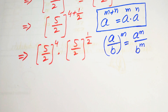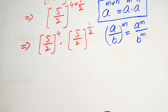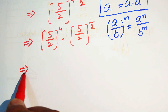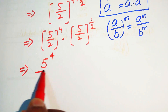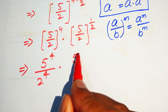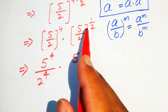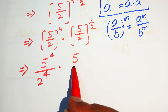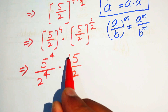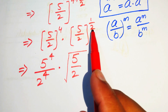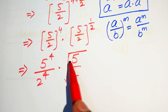According to this exponential law, we write the exponent separately on both terms. It becomes 5 to the power of 4 divided by 2 to the power of 4, multiplied by the square root of 5 over 2. We know that a power of 1 over 2 is the exponential form of a square root, so we convert it to radical form.